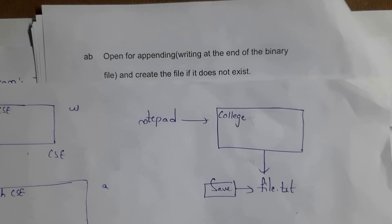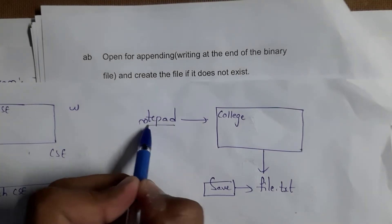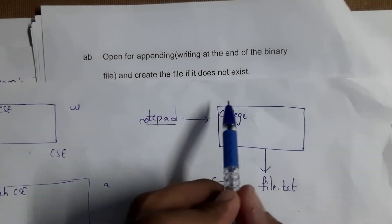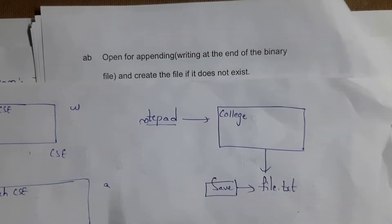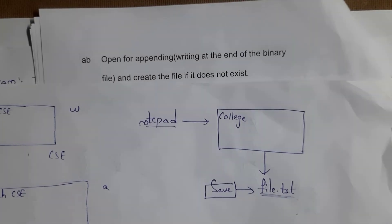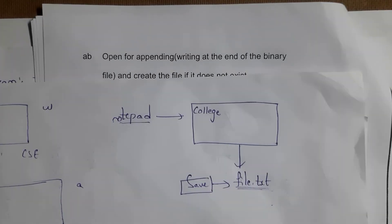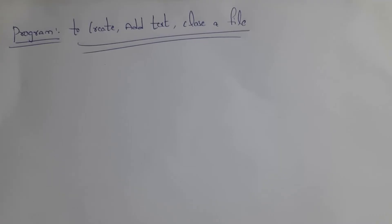Normally we create a file by going to Notepad, writing some text, and saving it with a name like file.txt. But our topic is about how to create a file using C programming. Now I will explain how to create a file, how to add text to that file, and how to close a file using C programming.